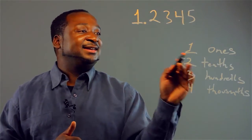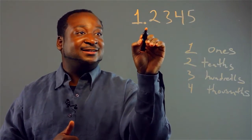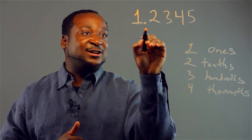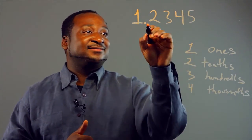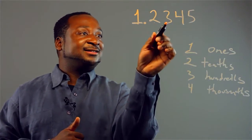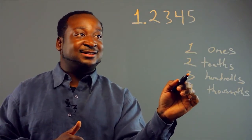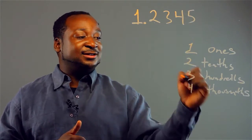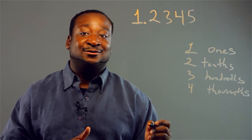Okay? I like to start off with one here because this is our ones place that's very important, right next to the decimal place. And two, this is tenths, three hundredths, and four thousandths, and so on.